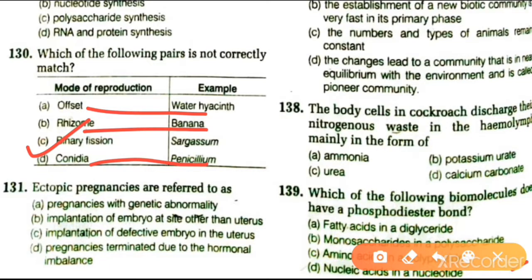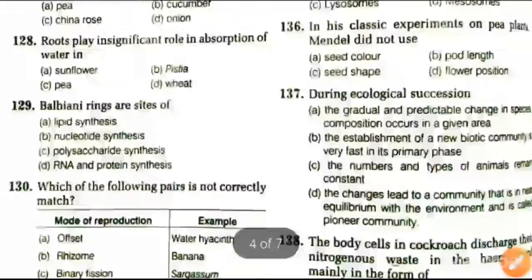Next question: ectopic pregnancy refers to pregnancy with genetic abnormalities; implantation of embryo at sites other than the uterus; implantation of a defective embryo in the uterus; or pregnancy terminated due to hormonal imbalance. The answer is implantation of embryo at sites other than the uterus.